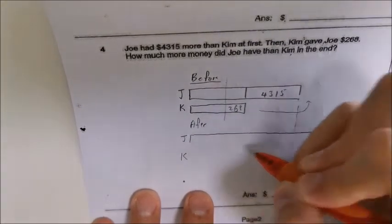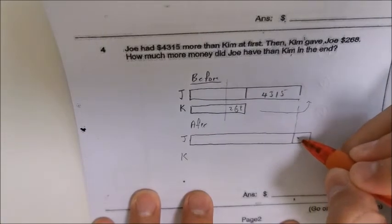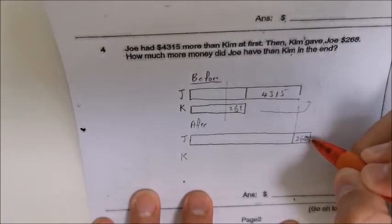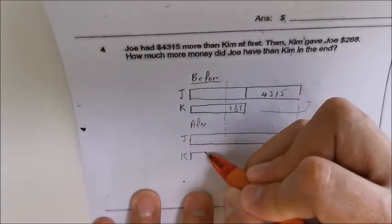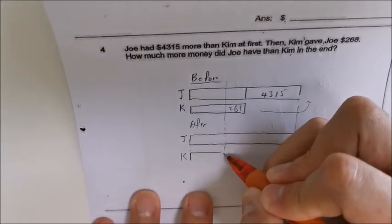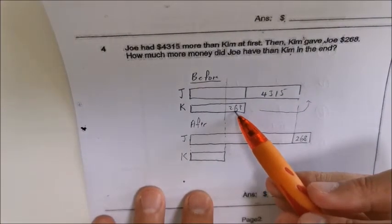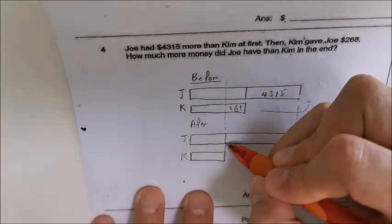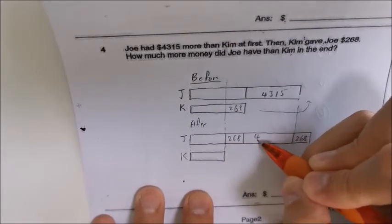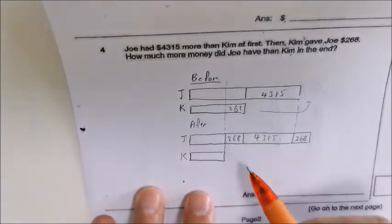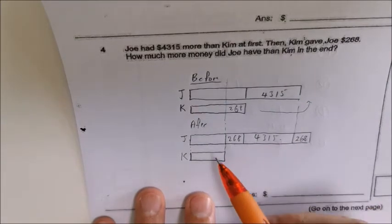So Joe will have an extra two hundred and sixty eight dollars. And for Kim, Kim will be left with this amount because you have to take away the two hundred and sixty eight. At the end, you can see that Joe has two hundred and sixty eight here, and this is four thousand three hundred and fifteen.